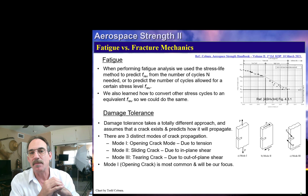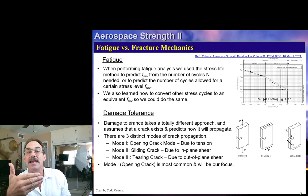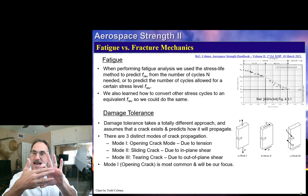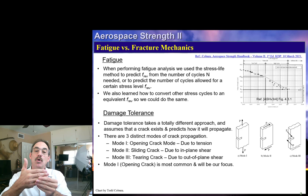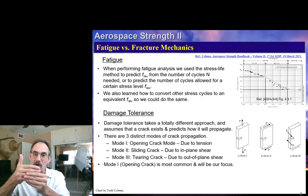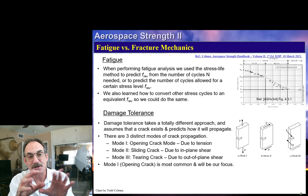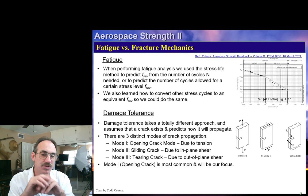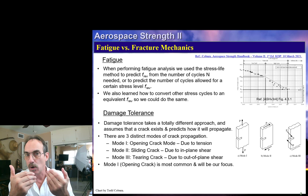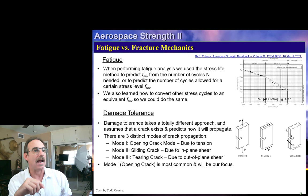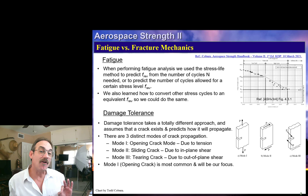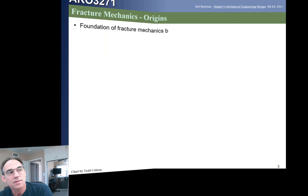When using a fracture mechanics approach, we look at three basic types of crack growth. Mode 1 is an opening crack — under tension load, the crack opens. Mode 2 is a sliding crack, where shear stress slides the part along itself. Mode 3 is a tearing mode. Fracture mechanics applies to all modes, but the most common and critical one in aerospace is the Mode 1 opening crack, which will be the focus of our study here.